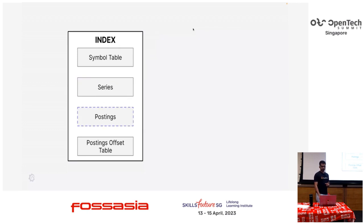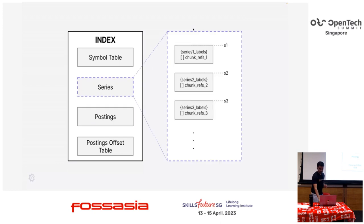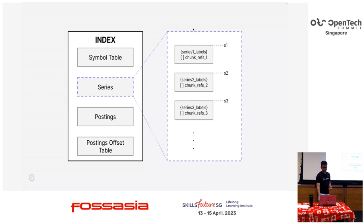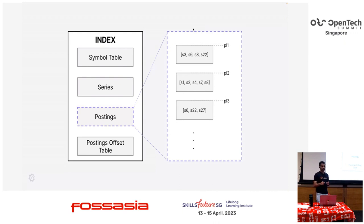Now we come to the interesting part. In the inverted index world, the postings are nothing but the series. Every series has a reference — S1, S2, S3 — those are byte offsets in the index. If I give you a series reference called S1, you just take the offset in the file and there you get the series. In Prometheus, we align it to 16 bytes, so the reference is the actual byte offset divided by 16. If I give you a reference, you multiply it by 16, get the byte offset, and directly go to the series. Postings are series IDs and we store a list of posting lists. This particular section stores a list of those series IDs, and the reference PL1, PL2 is again the byte offset in the file.